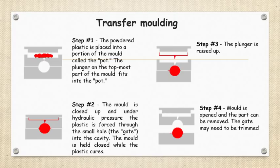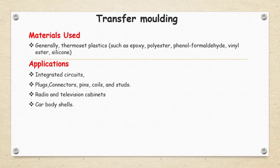Looking at the four steps: in step one, powder plastic is placed into the pot portion of the mold and the plunger fits into the pot. In step two, the mold is closed and under hydraulic pressure the plastic is forced through small holes or gates into the cavity. The mold is held closed during the curing time. In step three, the plunger is raised. In step four, the mold is opened and the part is removed; the gates may need to be trimmed.